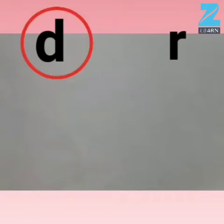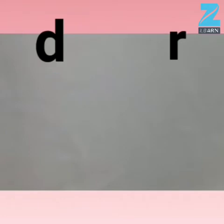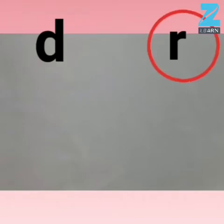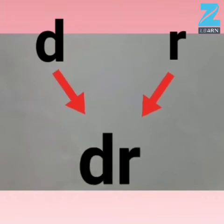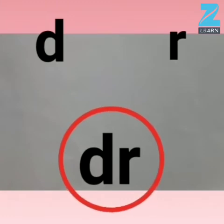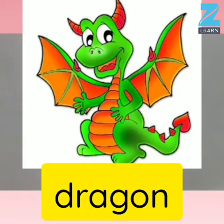Children, letter D makes the sound D, and letter R makes the sound R. But when you put both the letters together, they make the blend DR. Now let us see a few words starting with the sound DR. Dragon — DR, dragon.